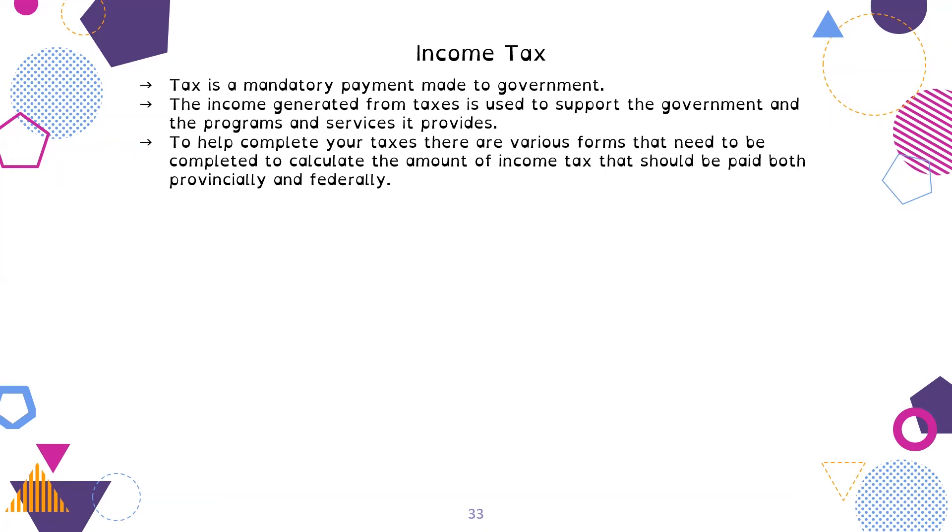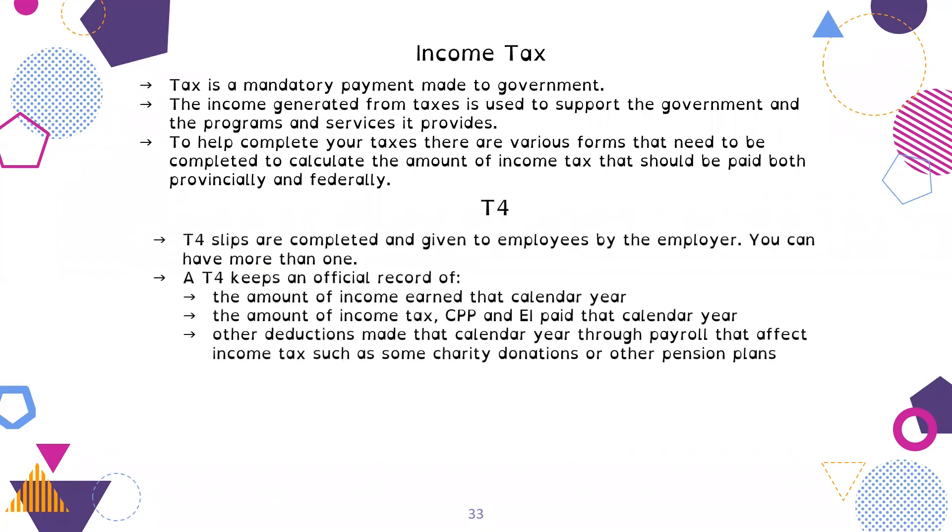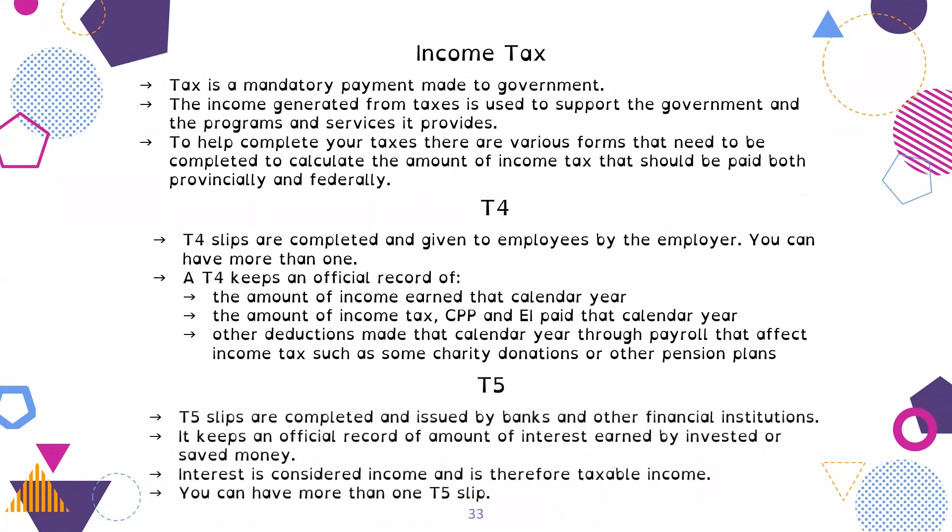To help complete your taxes every year, there are various forms. You need to know your T4s, which are slips given from your employer that tell you how much you earned from that calendar year. You may have more than one. It also tells the amount of income tax, CPP, and EI that you paid. Then there are T5 slips issued from banks and financial institutions. It is the official record of any interest earned on investments or saved money. This is considered income, so you need to declare it on your taxes.